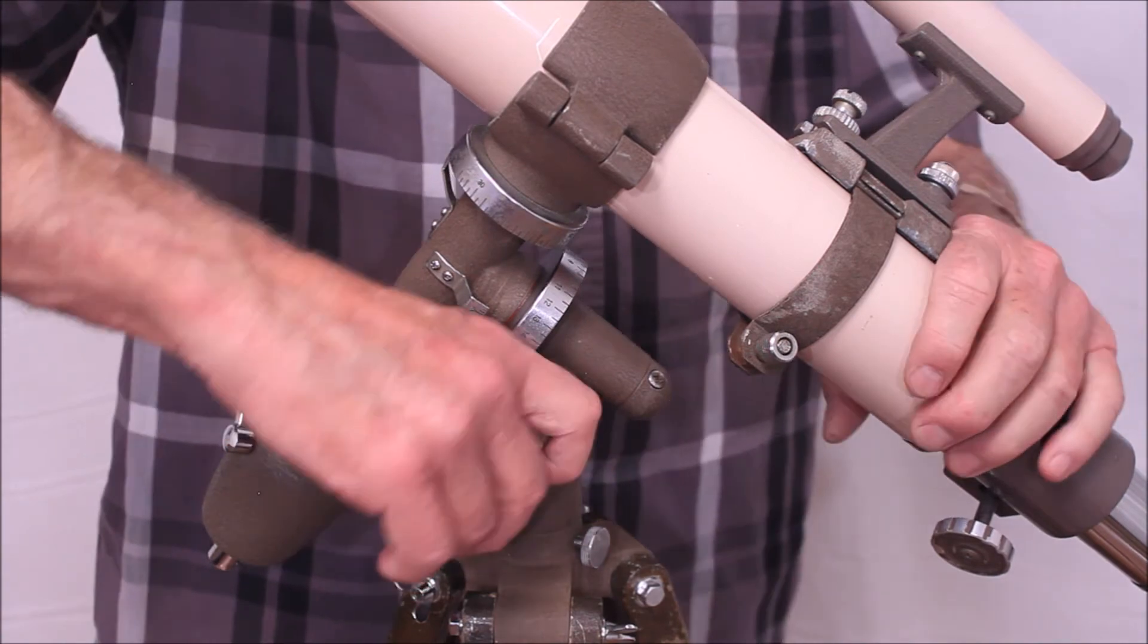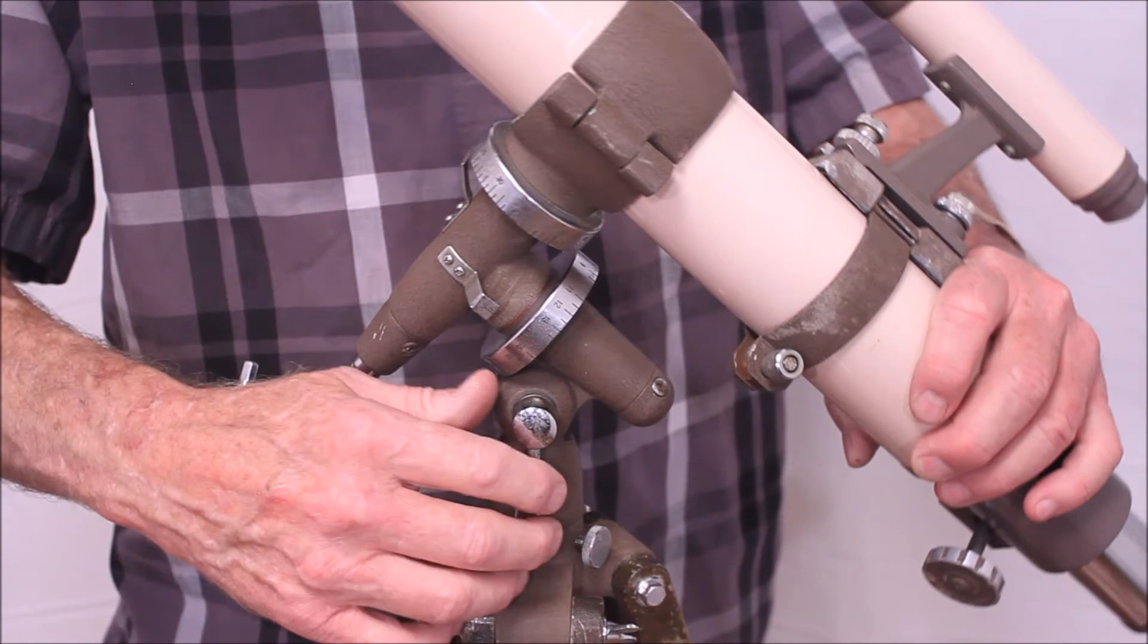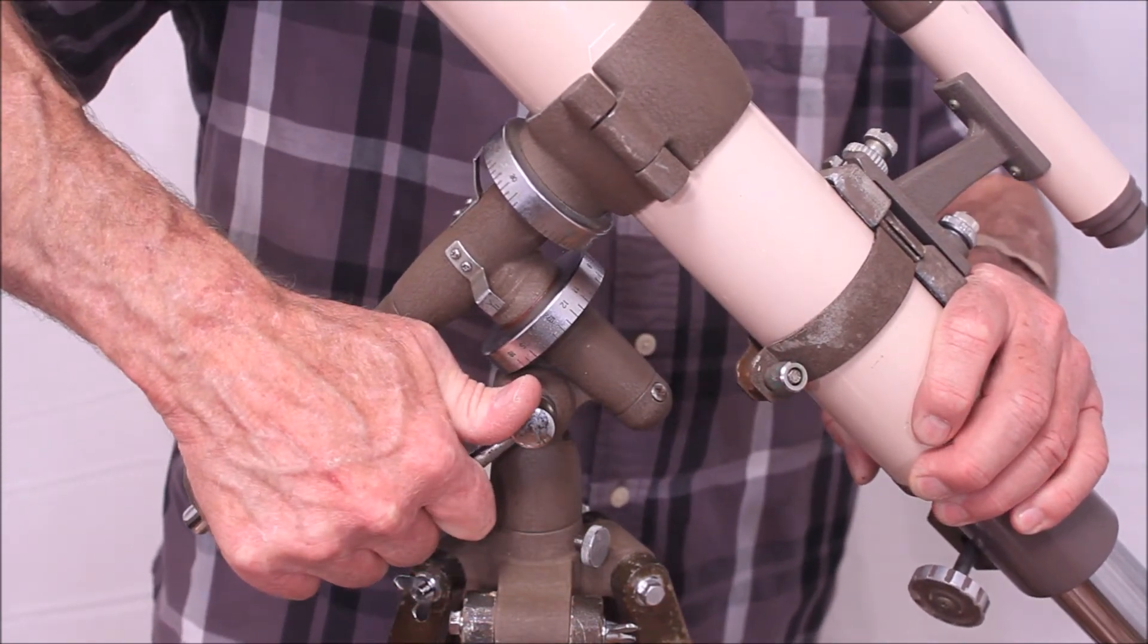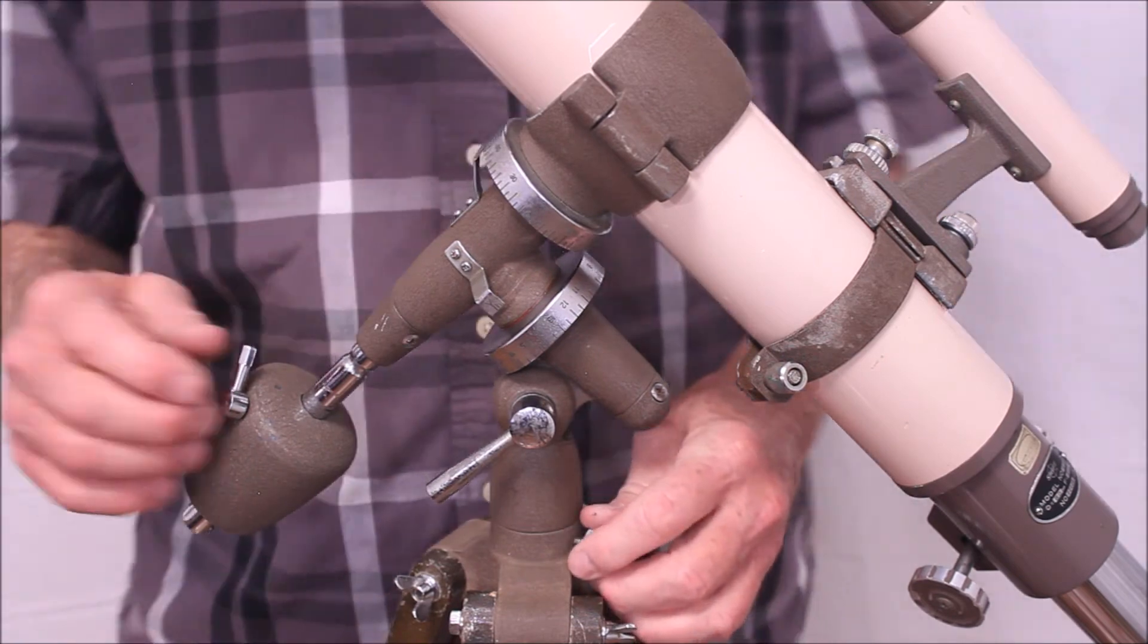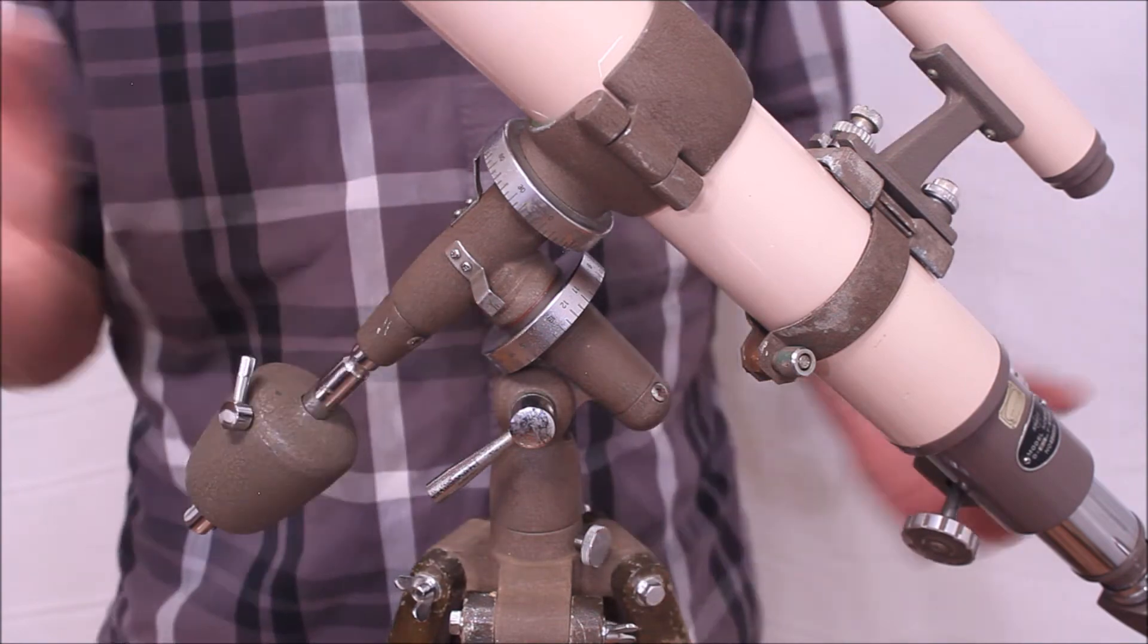Then of course for polar alignment you're going to loosen this guy here. You're not going to get a real precise polar alignment here. But you don't need one for a little scope like this. You'll get very adequate tracking if you're even somewhere close to the pole. I generally all I do is just basically aim these things north and I'm done.